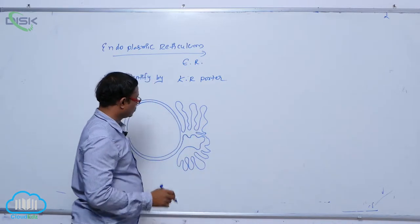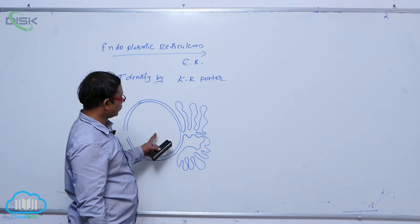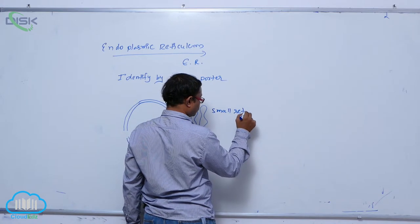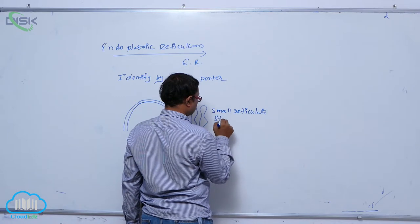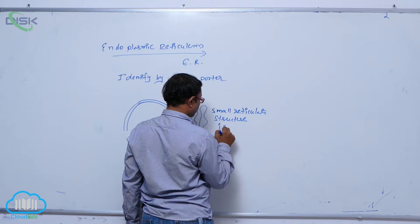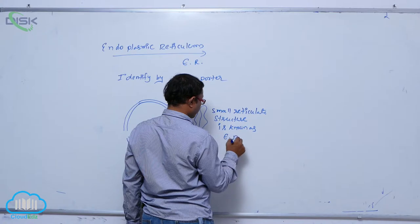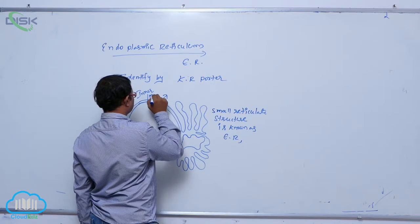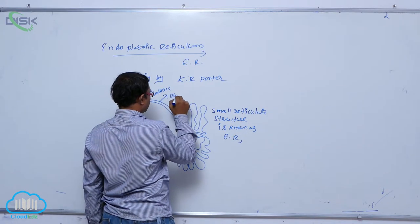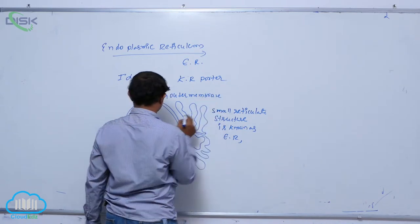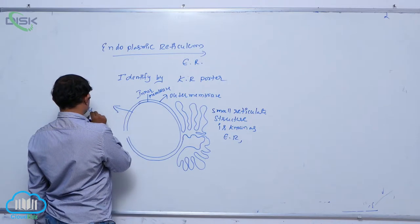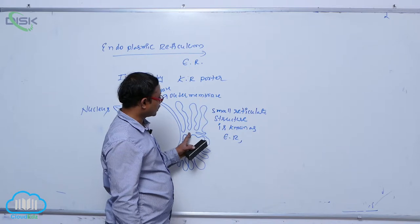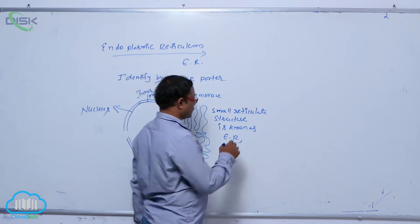The endoplasmic reticulum is a nuclear membrane extension — specifically the outer membrane of the nucleus — extending into the cytoplasm in the form of tiny reticulate structures, forming a network-like structure. Reticulate means network.